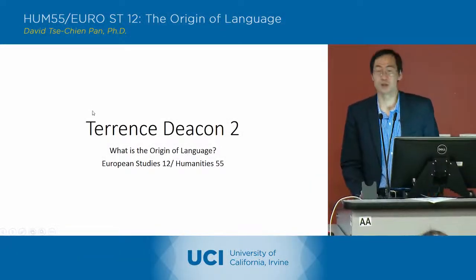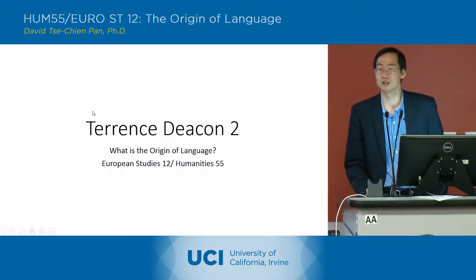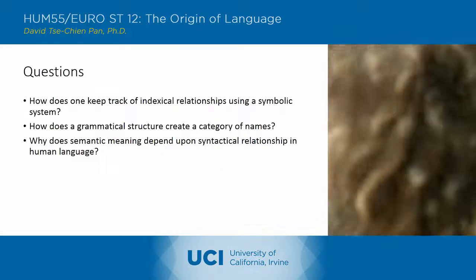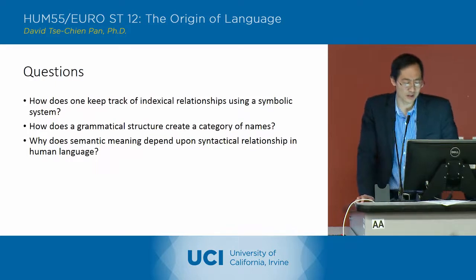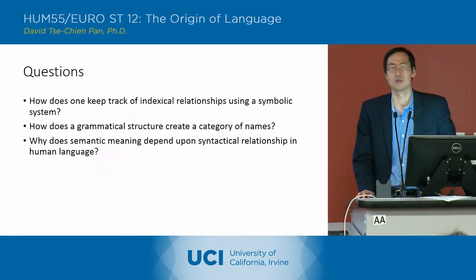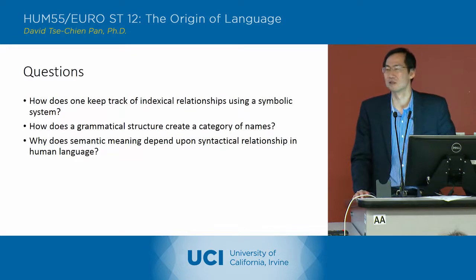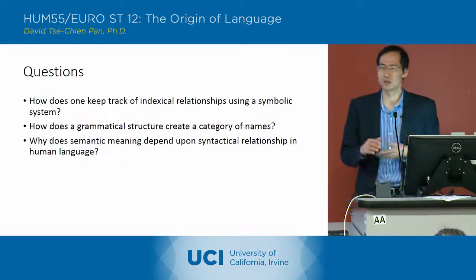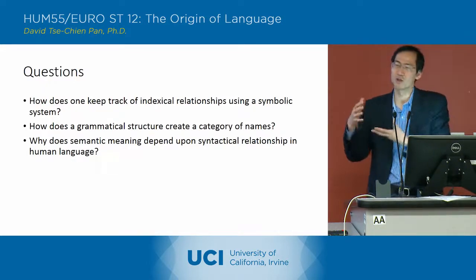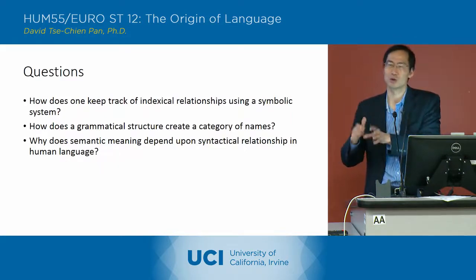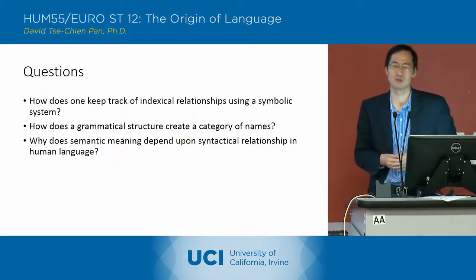We didn't finish with the questions last time, so I wanted to finish with the questions for the last set of slides, and then we'll continue with today's lecture. So these are the questions we had at the end. How does one keep track of indexical relationships using a symbolic system? So if you recall, when the chimpanzees were learning how to understand these symbolic relationships, they learned the indexical associations first, basically just learning through memory which pairs match some type of reward.